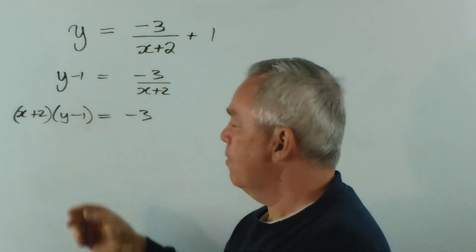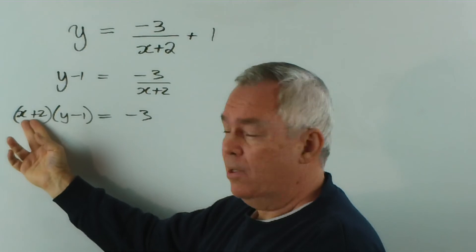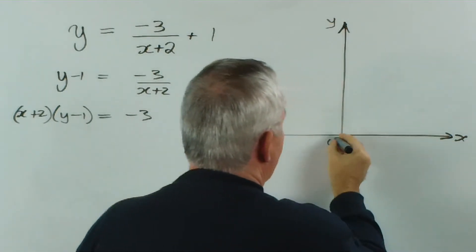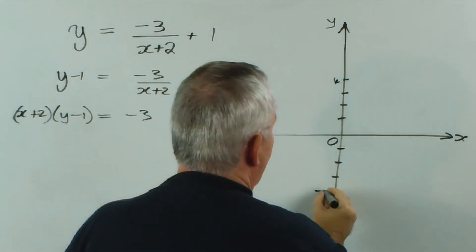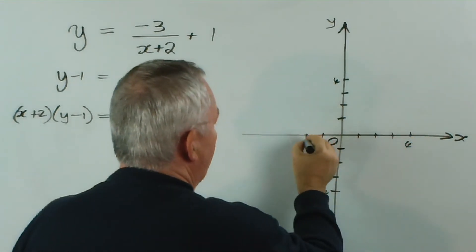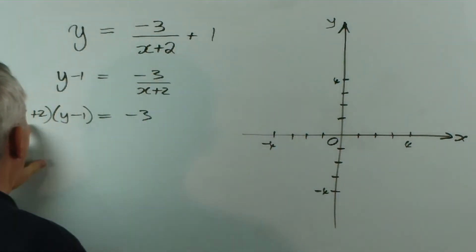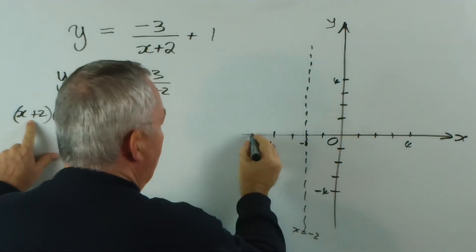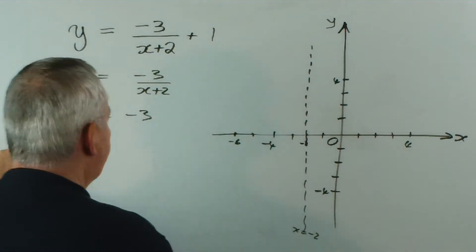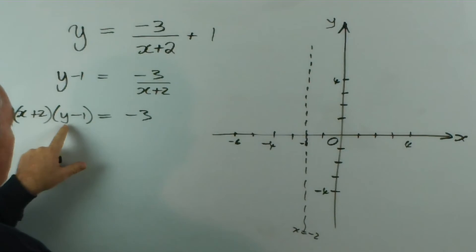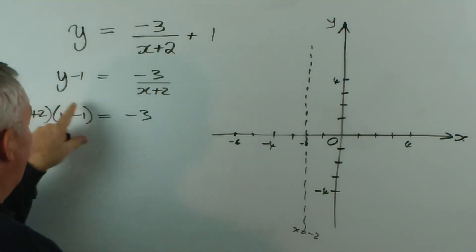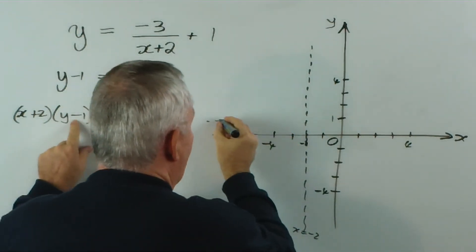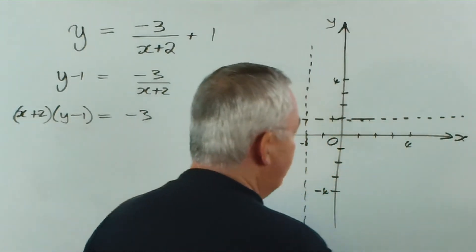Obviously, neither of these factors can be zero. What value of x would make x plus 2 equal zero? Negative 2 — that's our first asymptote. So let's draw the graph, marking axes and units, with the vertical asymptote at x equals negative 2. And the y value that would make y minus 1 equal zero would be y equals 1 — 1 minus 1 is zero — so there's no possible way that y could equal 1 for this graph. So we eliminate it: if y equals 1, the graph cannot possibly touch that line — and that's why it's an asymptote.